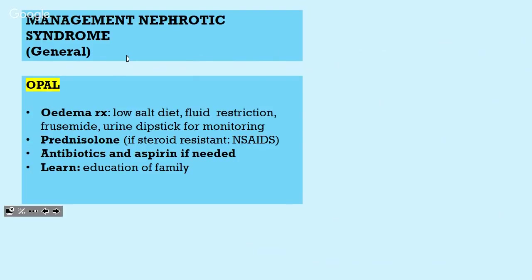For OSCEs, if someone comes in with nephrotic syndrome, the acronym is OPAL. Edema management: fluid restriction, monitor fluid input and output, low salt diet, diuretics, and regular urine dipstick for protein. Steroids — and if steroid-resistant, NSAIDs. Antibiotics if infection occurs and aspirin for anticoagulation complications. Education of the family, particularly in children — they'll want to know why this is happening and why they have to dip the urine every day.